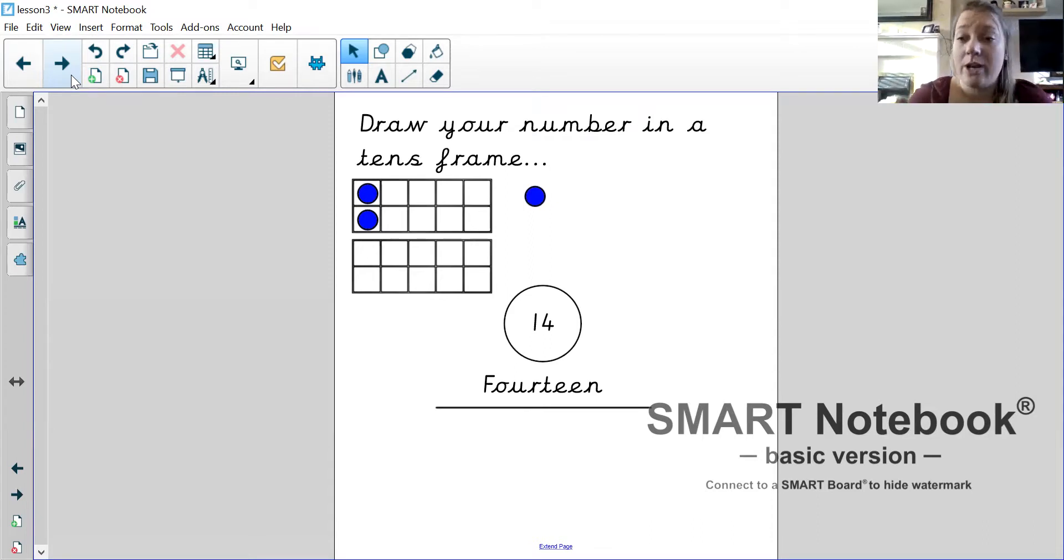Once you've written your number on the line, in the top corner can you draw two tens frames please? You're doing that because we chose a number between one and twenty and we need two tens frames. So draw two tens frames for me. Each little section only needs to be big enough for a little circle or a dot. It doesn't need to be really, really big.